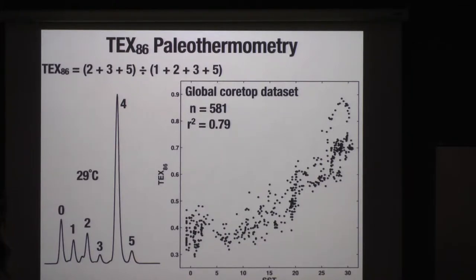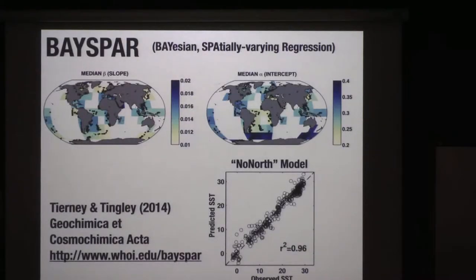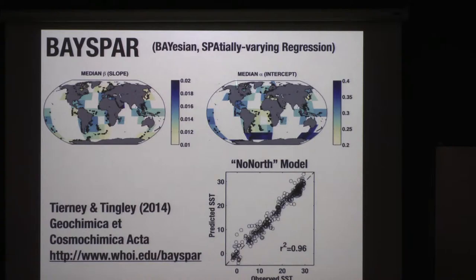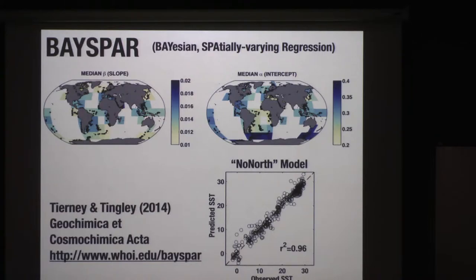We can use this relationship to form a calibration. You could fit a linear or nonlinear line to this relationship. We've taken a more sophisticated approach: a Bayesian and spatially varying regression model for this proxy. The reason is that there are some regional differences in the TEX–temperature relationship, which may have to do with microbial ecology or other factors. We can account for those differences by allowing the regression terms to vary slowly spatially. In the end, we can account for almost all of the variance in the data when we consider spatial changes in the regression. We have an online website where you can try it out on your own data, and you can read the GCA paper for details.